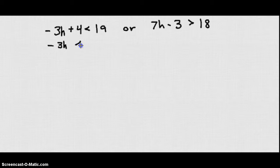Let's subtract 4 from both sides. We get negative 3h is less than 15. Let's add 3 to both sides over here. We get 7h is greater than 21.